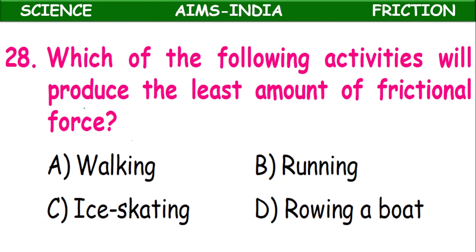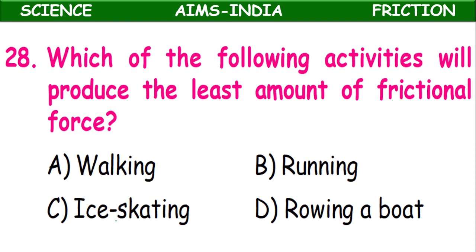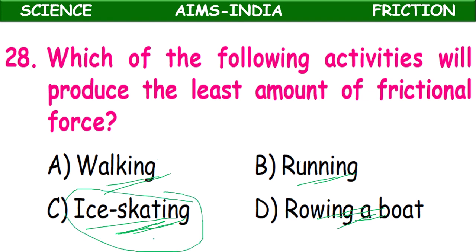Twenty-eighth question: Which of the following activities produces the least amount of frictional force — walking, running, ice skating, or rowing a boat? On ice, less frictional force is present because of its smoothness, making it easy to skid. Ice skating requires special training; otherwise we slip easily. Compared to walking, running, or rowing, ice skating has the least frictional force. Answer: ice skating.